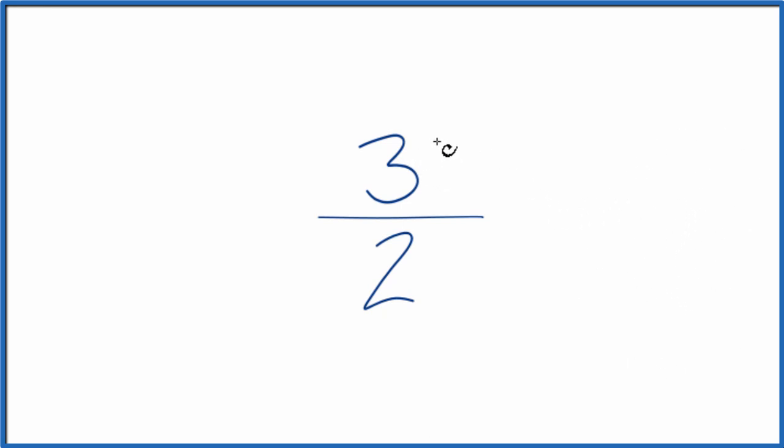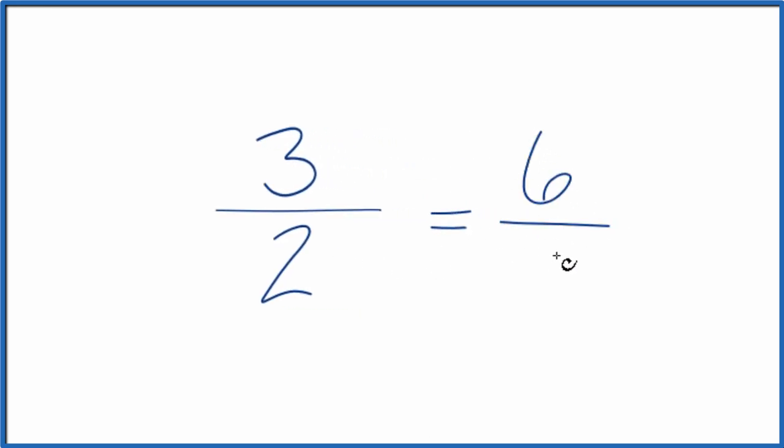So we could just double the whole fraction here. So 3 times 2 is 6, 2 times 2 is 4. And 6 fourths, that's an equivalent fraction for 3 over 2.